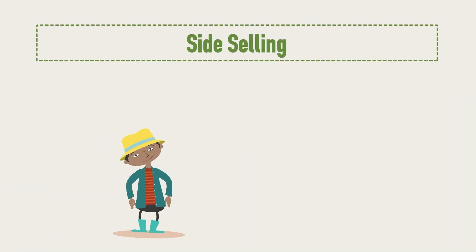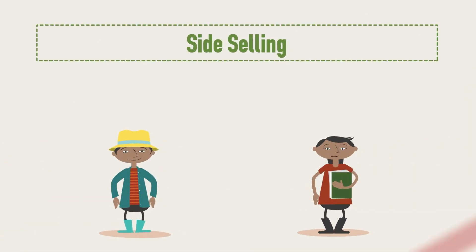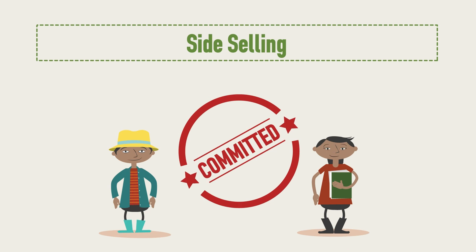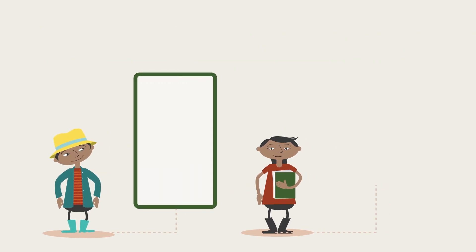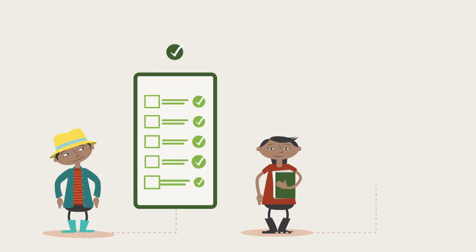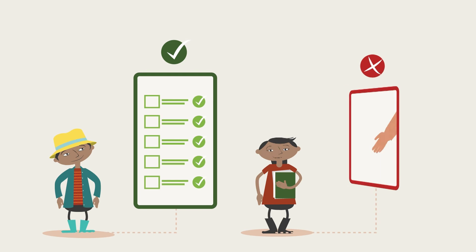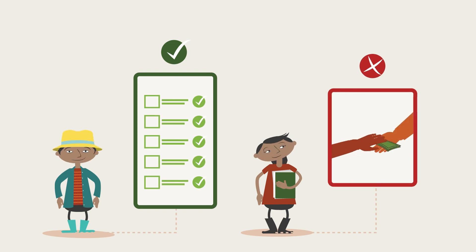Side-selling. Associations need to show that they have committed members by showing historic evidence of timely delivery and no side-selling by members.